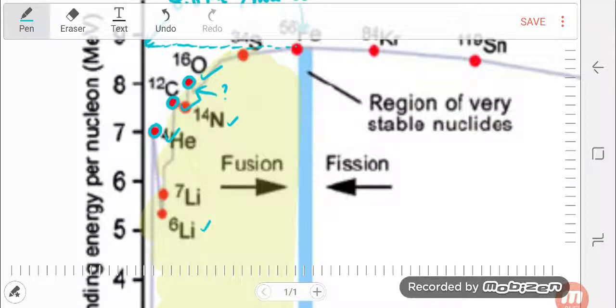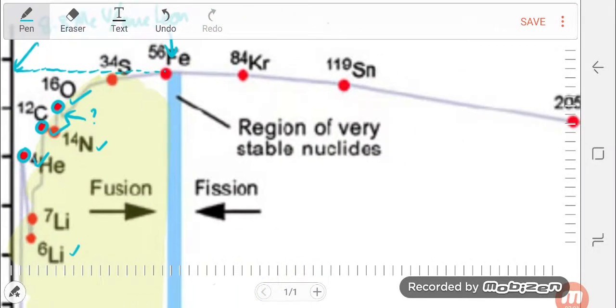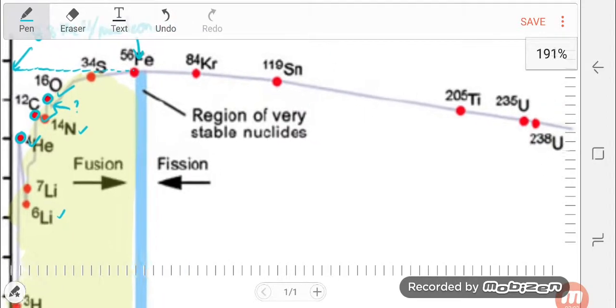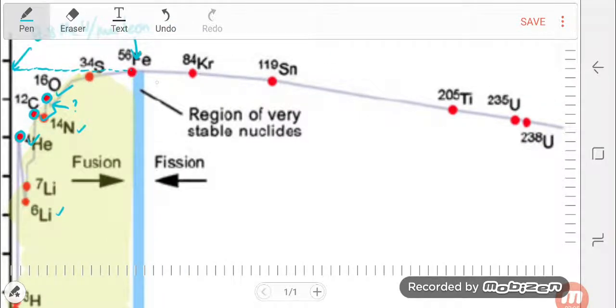These are the three very stable elements to compare it with neighbors. Next we have, we want to talk about this blue region. This blue region is what we call the region of very stable nuclides, area of maximum stability.